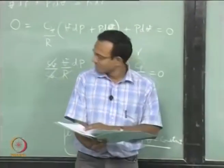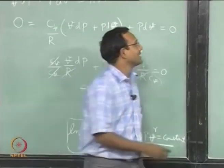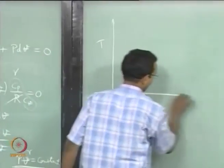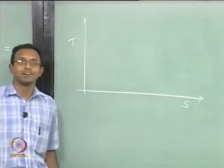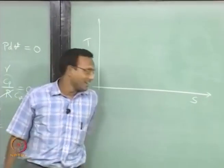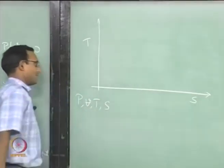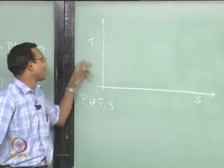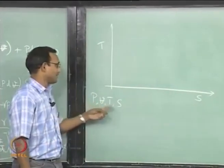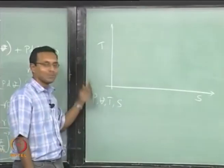Now let us pick the T-S diagram with temperature and entropy as the variables. For a constant temperature process it is a horizontal line; for a constant entropy process it is a vertical line.